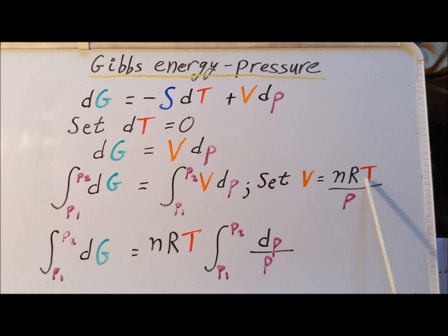Because nRT is a constant, it can be pulled through the integral sign. So now the right-hand side becomes nRT times the definite integral from P1 to P2 of dP over P.